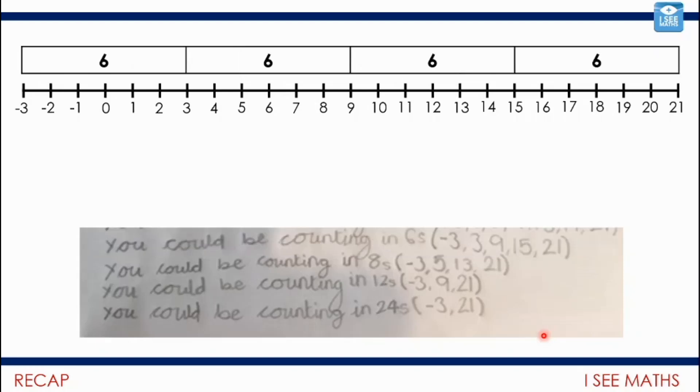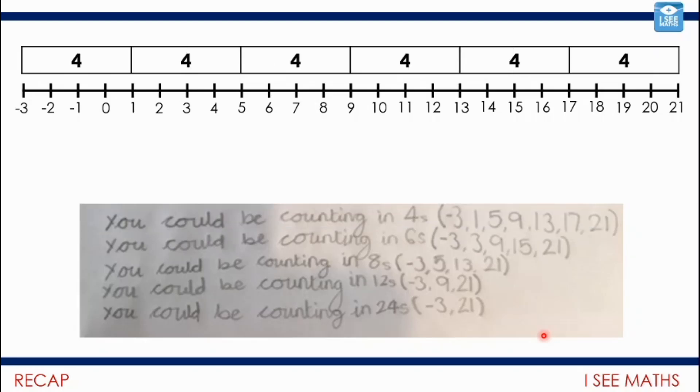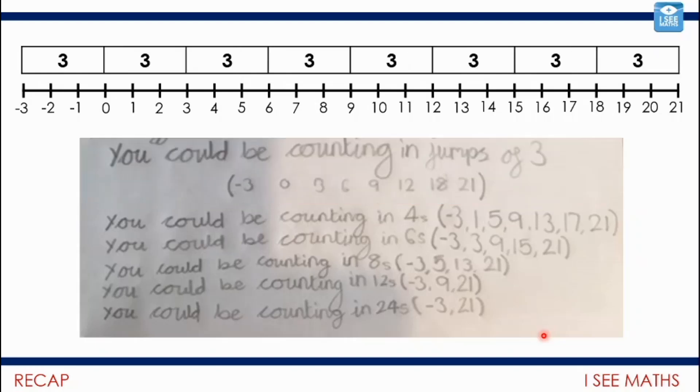I could have split the 24 into four in jumps of six as shown there. Now, I can't split 24 into five because five isn't a factor of 24. But I could split it into six fours, just like there. There are all the intervals. It could be that I split it into seven threes as well. Now, I can't split it into 12 sections because then negative three, that wouldn't be the first negative number. It would be the second one. So there we can see all those solutions there. Great stuff.